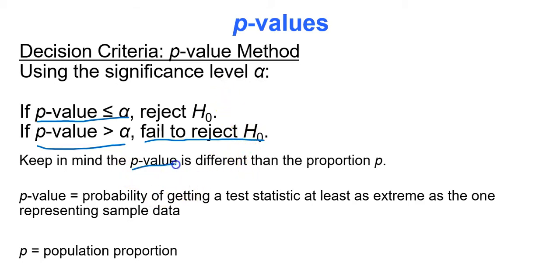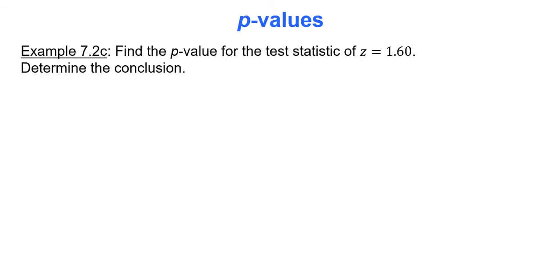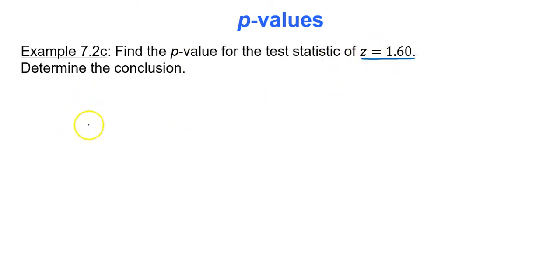Keep in mind a p-value is a probability, and a proportion is the percentage of a population that has a certain characteristic. Let's practice finding a p-value. Find the p-value for a test statistic of z equals 1.60 and determine the conclusion.